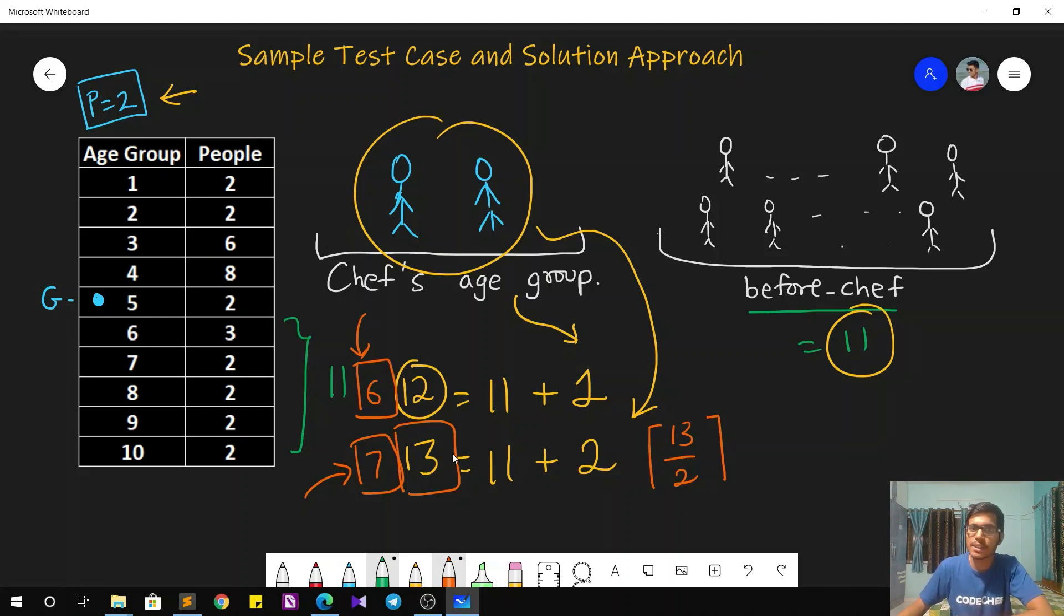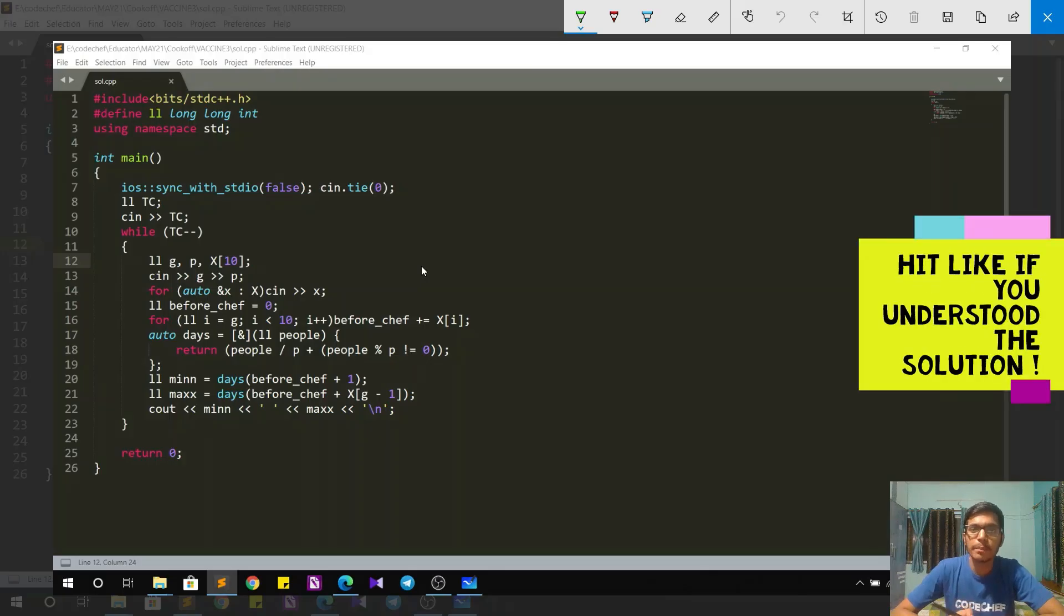Now let's get to the C++ implementation of the same. So the C++ implementation is just a reflection of what we just discussed. So I begin my code by taking the input of G and P that is the group of Chef and the people I can vaccinate per day. After that, I take the array input for the data that is how many people are present in each age group. Total of 10 age groups are present. So I take that data.